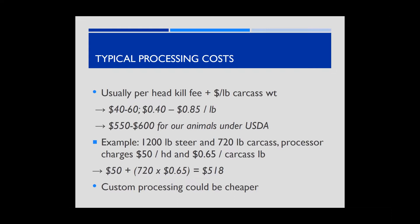USDA-inspected processing is preferred over custom-exempt processors. Custom-exempt is cheaper but offers less flexibility. With USDA-inspected meat, if a customer backs out you can legally resell that labeled meat. With custom-exempt processing, that option doesn't exist, creating more risk, though it can be used for direct marketing when providing a service for the end user.